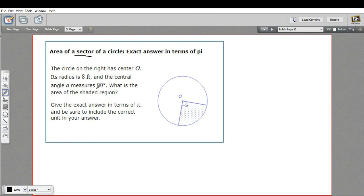In this case, our central angle is 90 degrees, and we're told that the radius is 8 feet. So how do we figure out the area of a sector of a circle? Well, you know how to figure out the area of a circle.